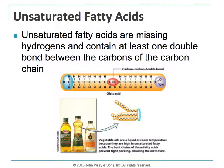Unsaturated fats come from fatty acids that are missing hydrogens and contain at least one double bond between the carbons of the carbon chain. This fatty acid looks pretty similar to the saturated one, with the exception of one spot: two carbons have hydrogens on the bottom but are missing them on top.